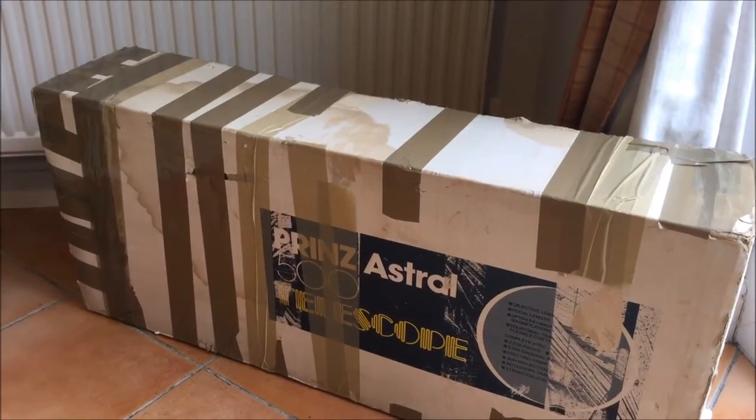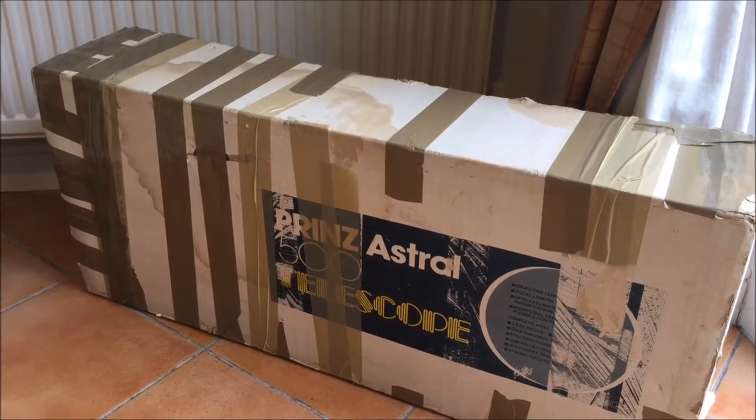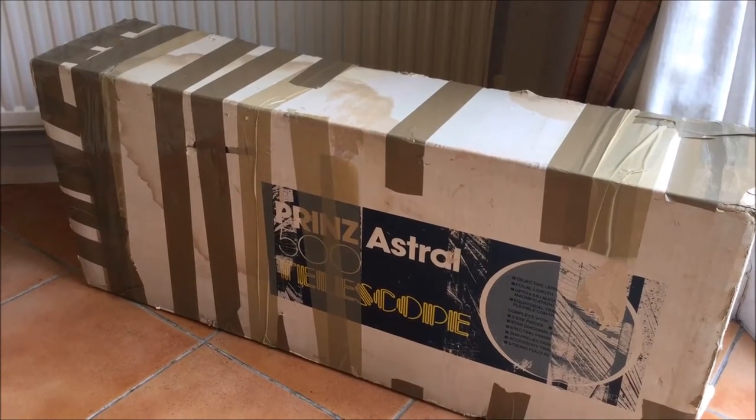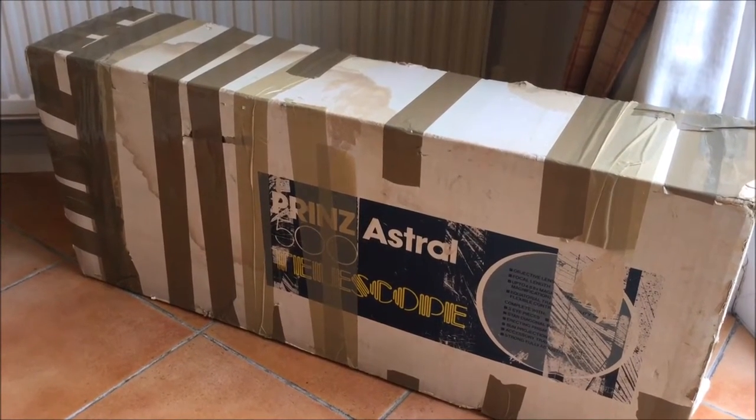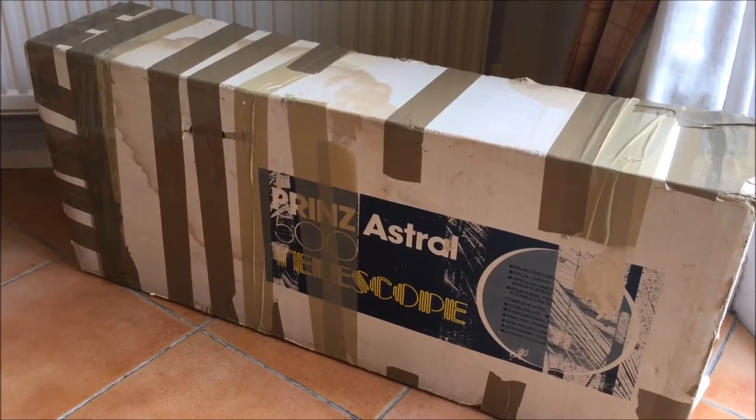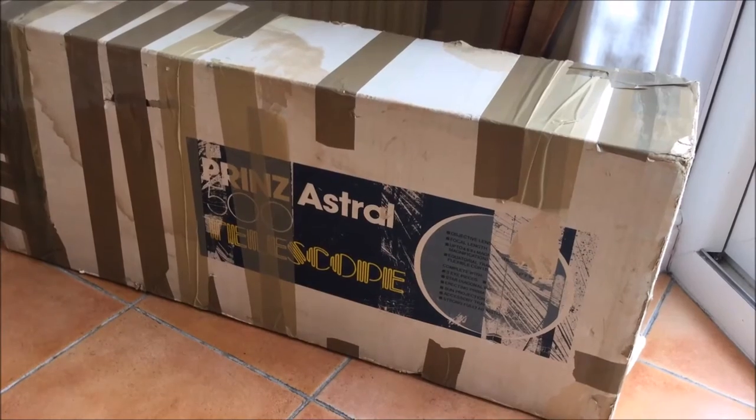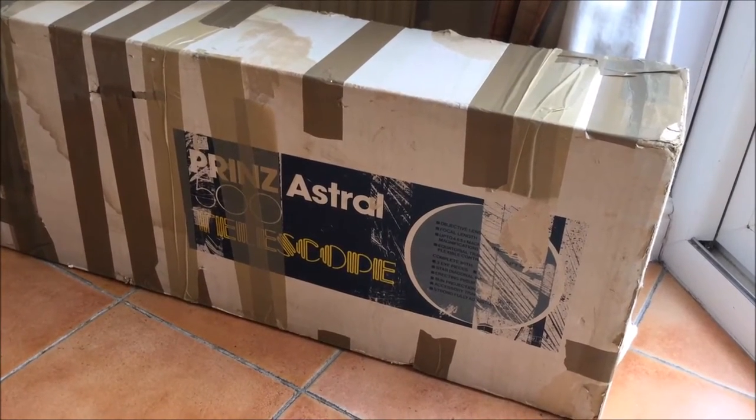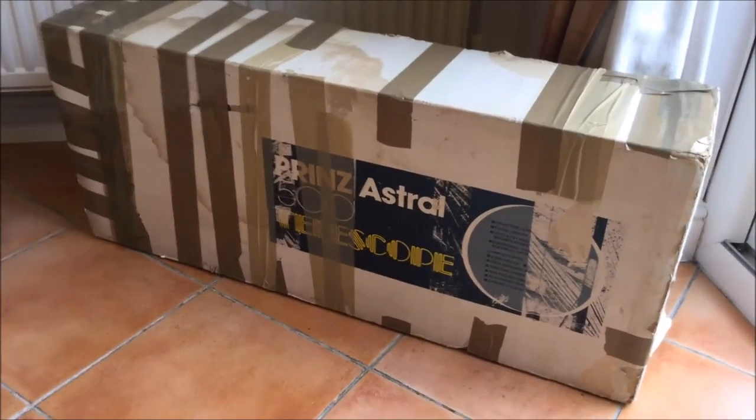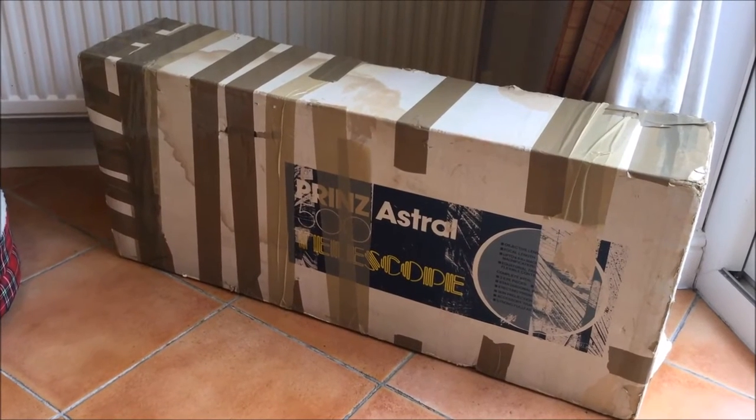Now this particular telescope was sold in the UK under the brand name of Prince. We're looking at a Prince Astro 500 model which came with an equatorial mount, three eyepieces, star diagonal, erecting prism, sun projection screen, and lots of other gizmos. It certainly came in an impressively sized box.